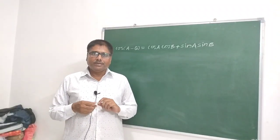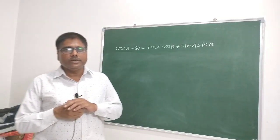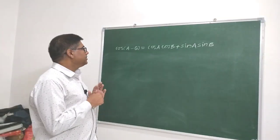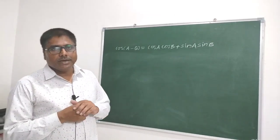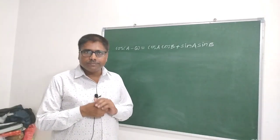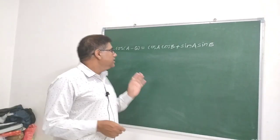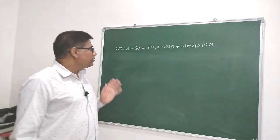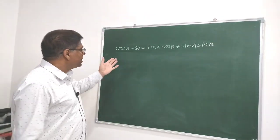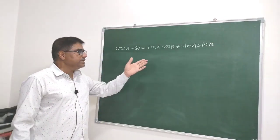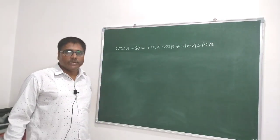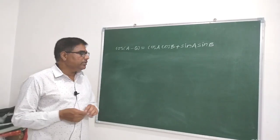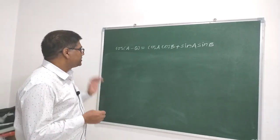Hello friends. In this video, let us derive the formula for cos(A+B), sin(A+B), and sin(A-B) from the cos(A-B) formula. As we know, the formula for cos(A-B) is cos A cos B + sin A sin B. Let us first derive the formula for cos(A+B).